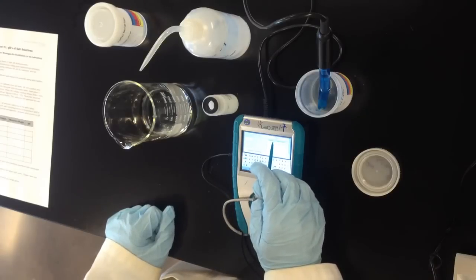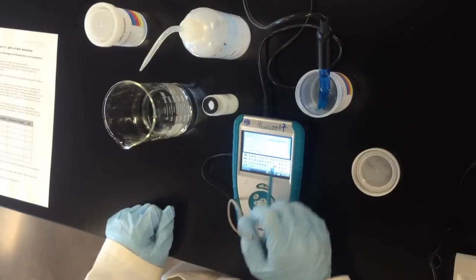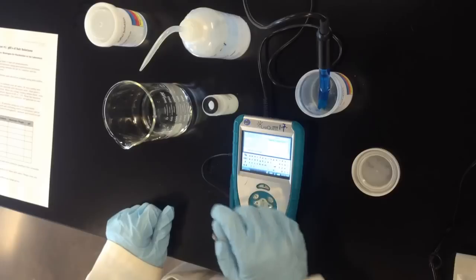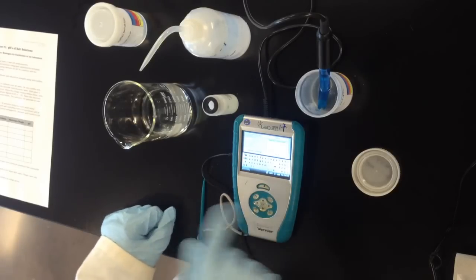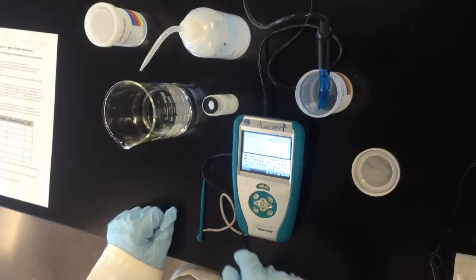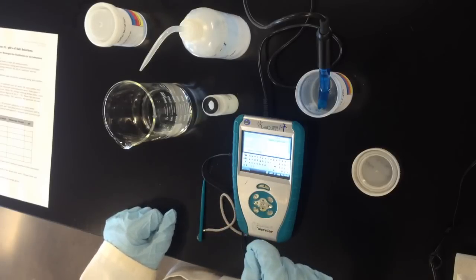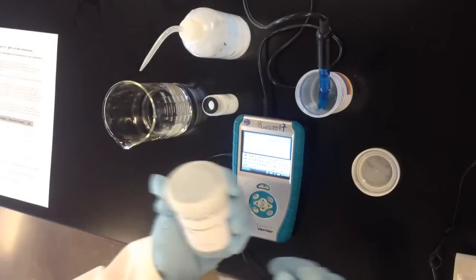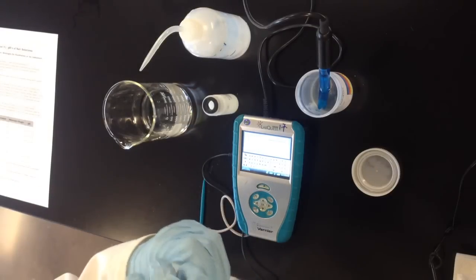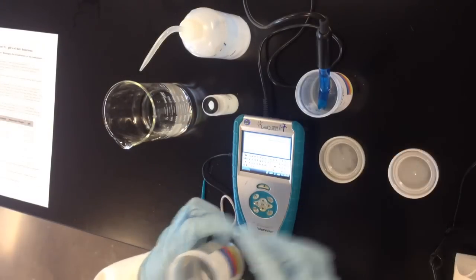We can hit that and that'll register the voltage which here is 2.40 volts. That's associated with a pH reading of 4.00 and notice that that's different from the pH reading we saw before we calibrated. The next step is to move it over to the pH 7 buffer and register the true value there as pH 7.00.